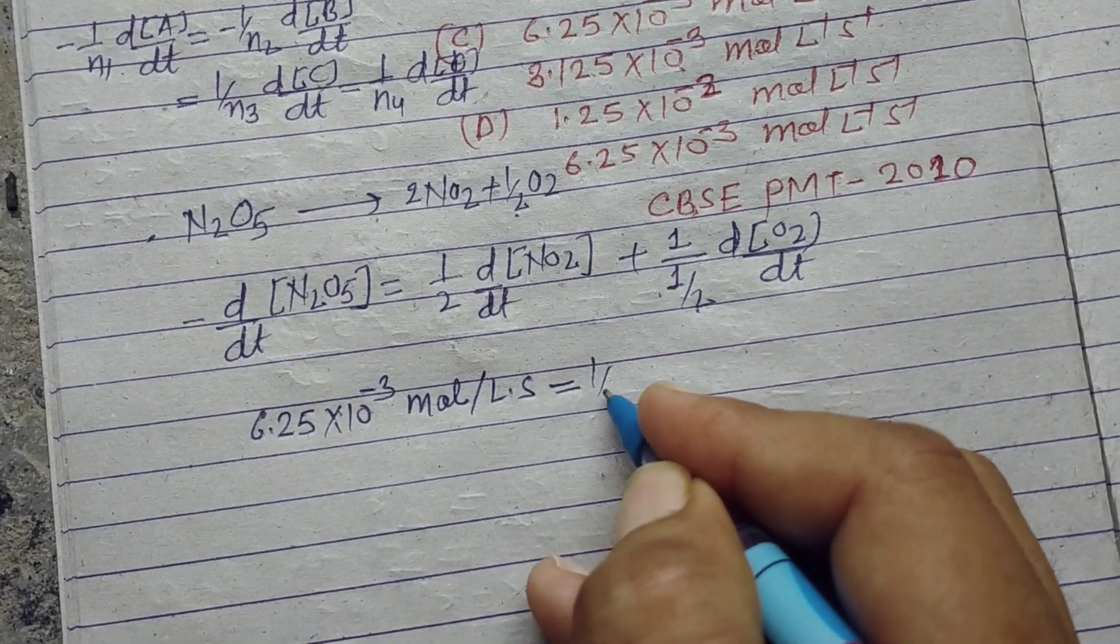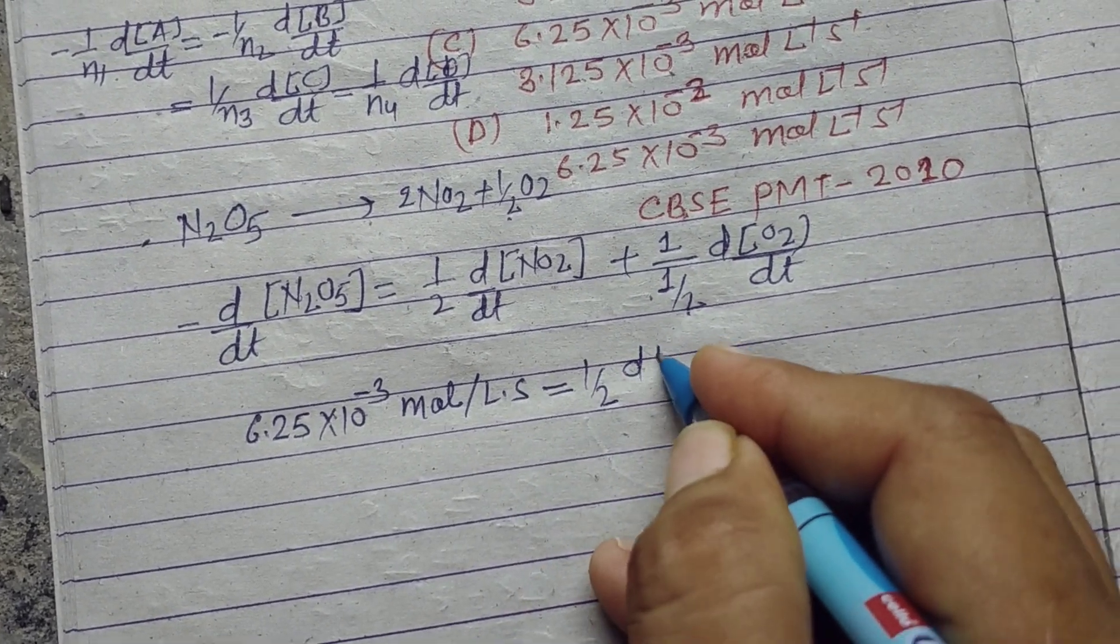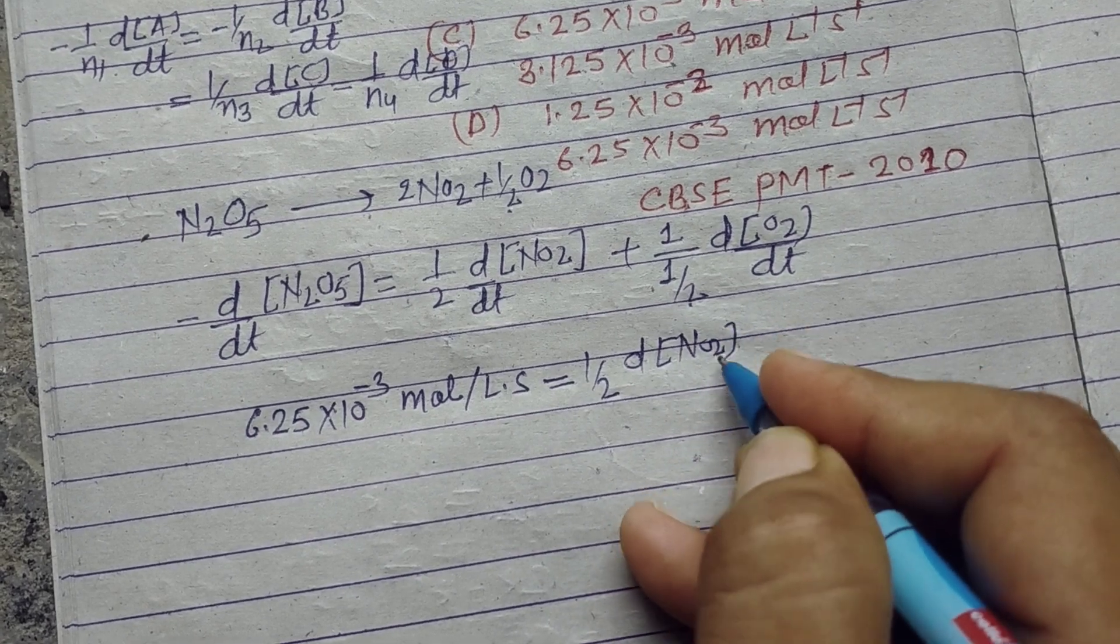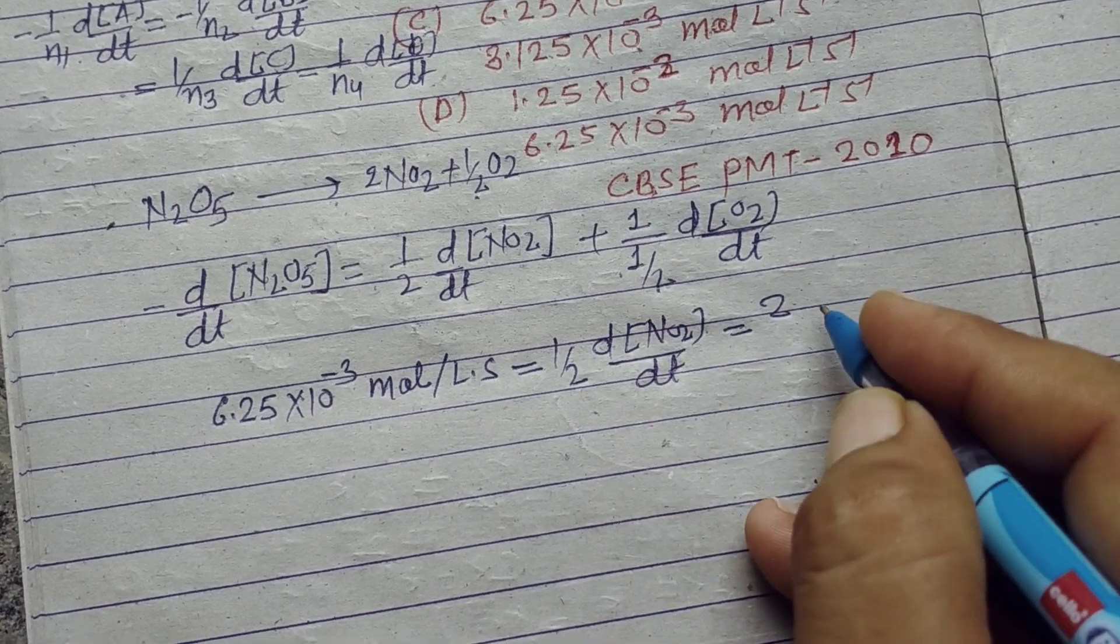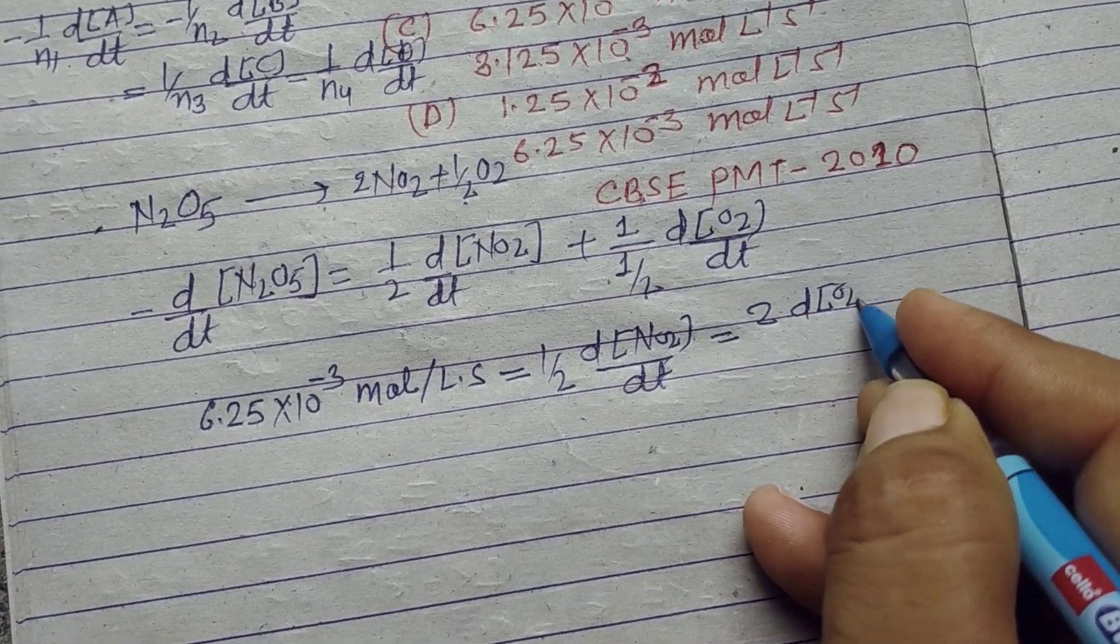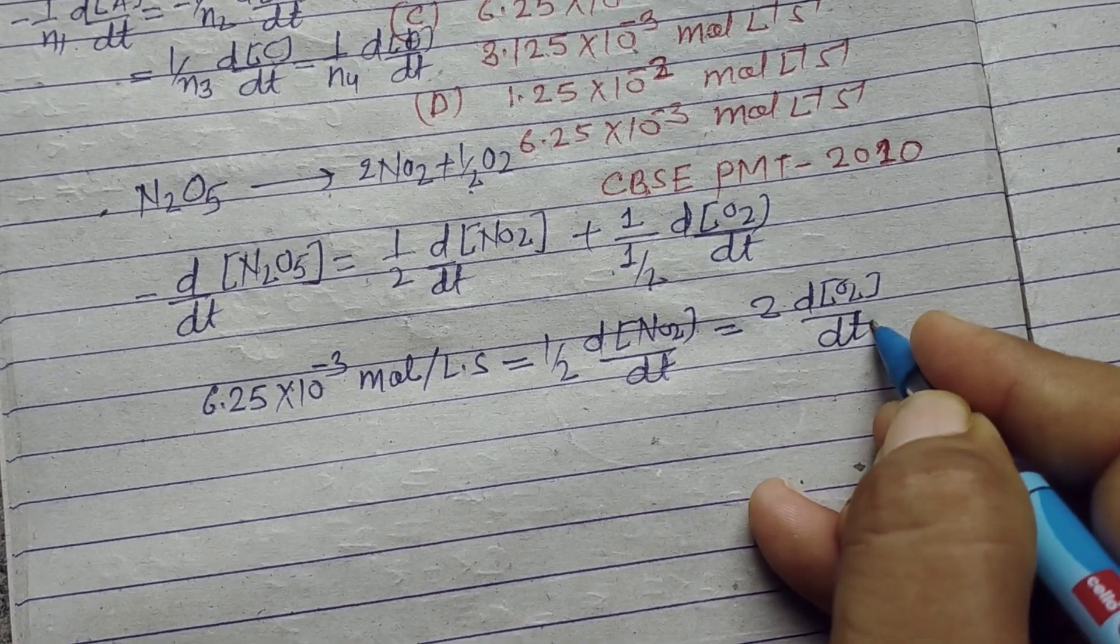Which equals 1/2 d[NO2]/dt equals 2 d[O2]/dt.